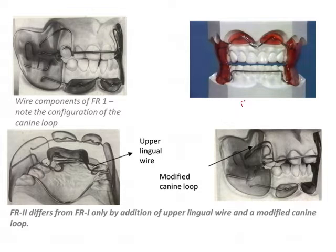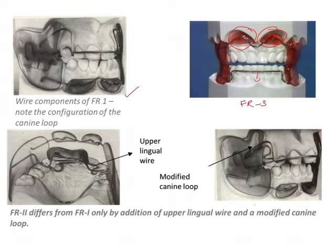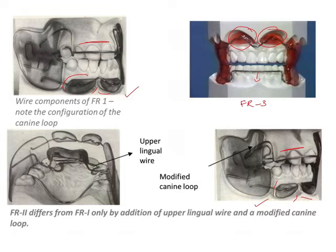FR 3 can be very easily identified based on two features: first is the lip pads, and second is the labial bow. In FR 1 and FR 2, the lip pads are present in the mandibular anterior region and the labial bow is present on the maxillary anteriors. In FR 3, which is used in Class III cases, the position of these components is reversed — the lip pads are seen in the maxillary anterior and the labial bow is seen in the mandibular anterior.